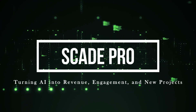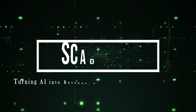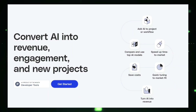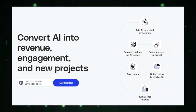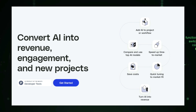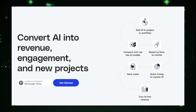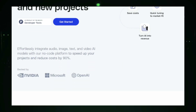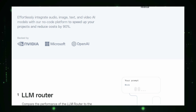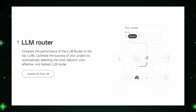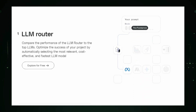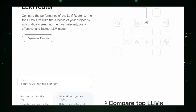Project number five: SkadePro — turning AI into revenue, engagement, and new projects. SkadePro is a dynamic platform designed to help businesses transform their AI capabilities into tangible revenue streams, higher engagement, and the development of innovative new projects. Whether you're in tech, marketing, or customer service, SkadePro provides the tools and insights to turn AI into a powerful asset for business growth. SkadePro starts by helping businesses identify key opportunities where AI can add value — from improving customer interactions with AI-driven chatbots to personalizing marketing efforts through data analysis or creating AI-powered products that solve specific business challenges.